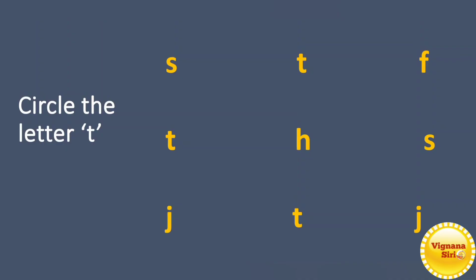Now we will see — circle the small letter T. The first letter is small letter S. This is small letter T, so we will circle it. The next one is small letter F. If you observe, small letter T and F are in reverse ways. Next is small letter T — we will circle it. Then small letter H, small letter S, small letter J, and small letter T — circle it. And small letter J.